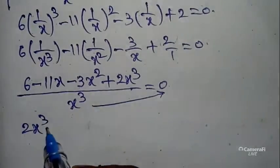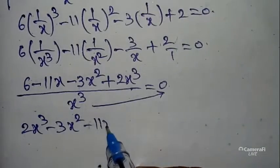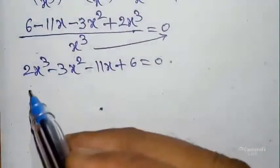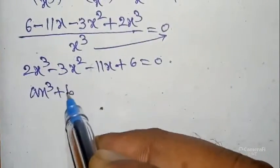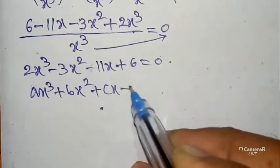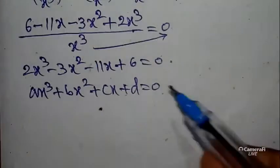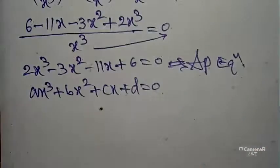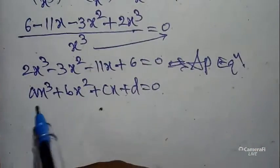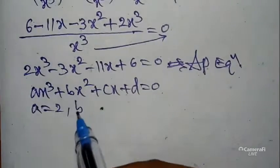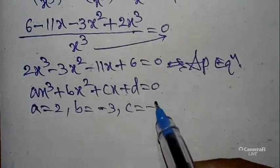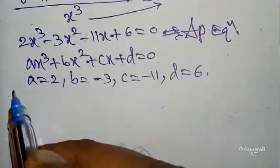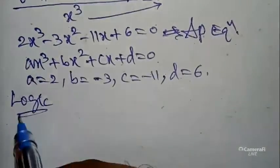So 2x³ minus 3x² minus 11x plus 6 equals 0. This is in the form ax³ plus bx² plus cx plus d equals 0. This is the AP equation — the Arithmetic Progression equation. Here a equals 2, b equals minus 3, c equals minus 11, d equals 6.